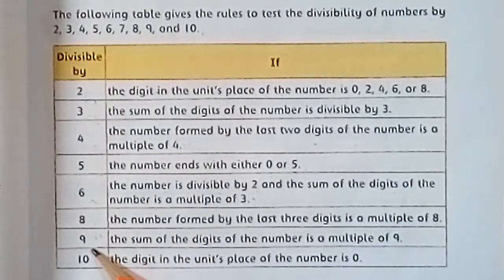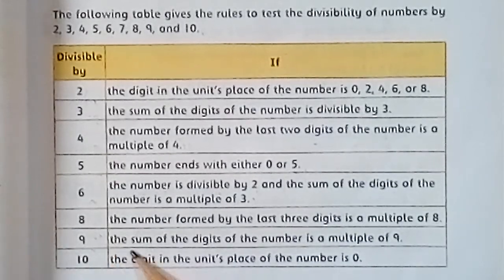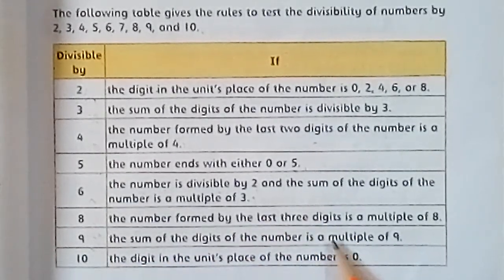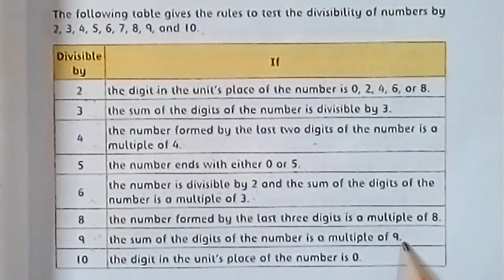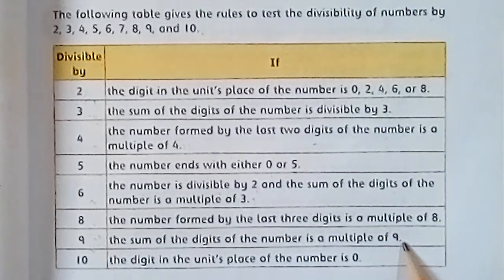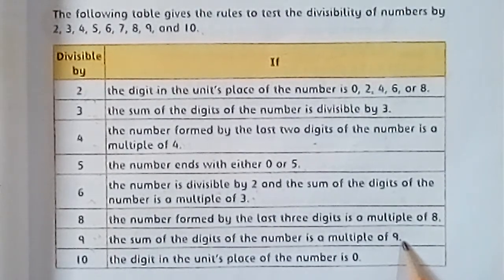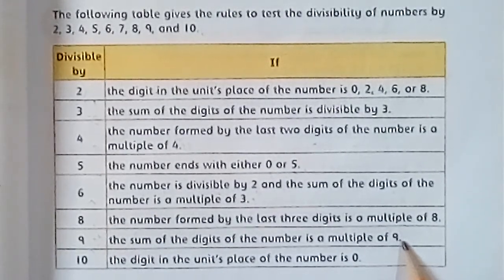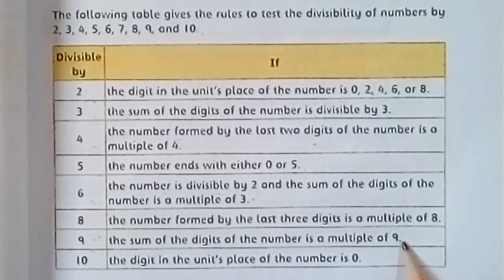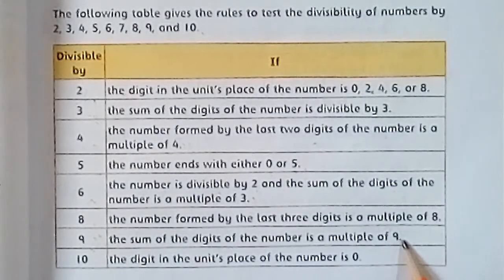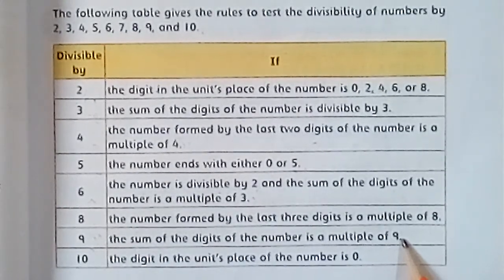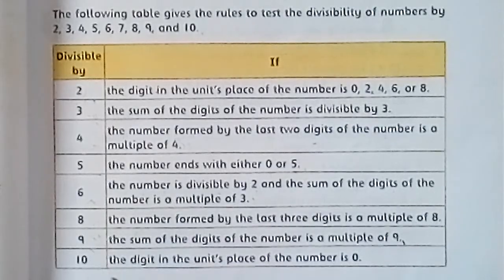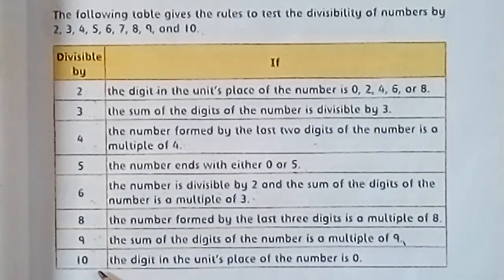The next one is divisible by 9. The sum of the digits of the number must be a multiple of 9. If the sum of the digits is a multiple of 9, we can say the original number is divisible by 9.